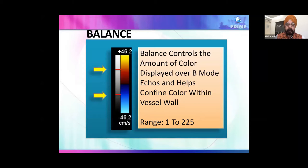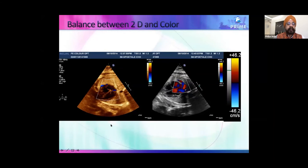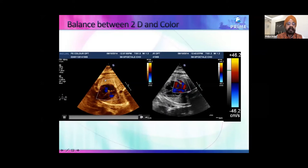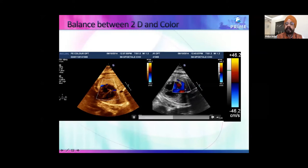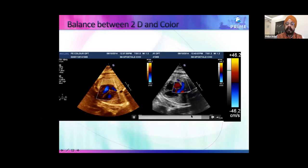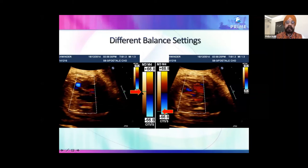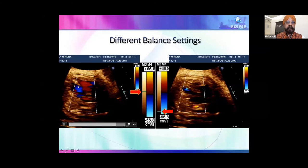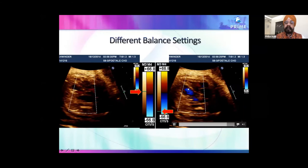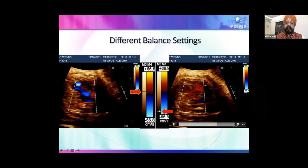In fetal echo, giving more importance to color data is better because you are more interested in color than 2D. For example, if you give priority to 2D, you don't see any vessel in the pulmonary area or pulmonary veins, and signals are not good. The moment you reduce priority of 2D, you start seeing pulmonary artery in red and pulmonary vein in blue. Similarly, reducing the balance helps you see a VSD, which in fetal echo is seen mostly by color and not 2D.